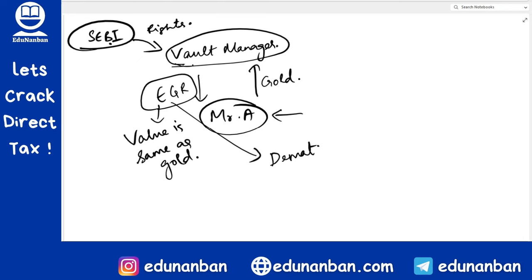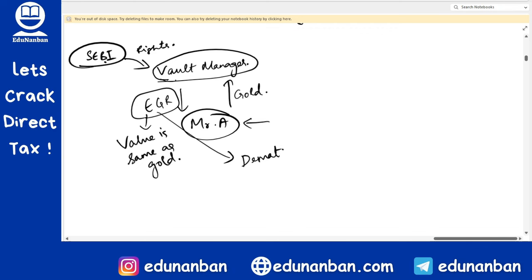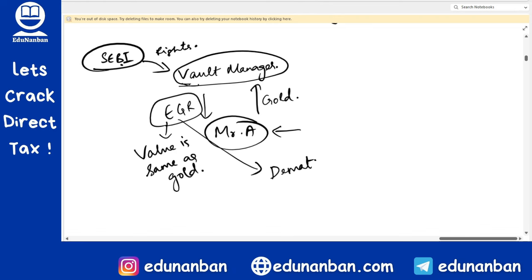If you have a broker account like Zerodha or Motilal Oswal, you can buy and sell Electronic Gold Receipts online at the current prevailing price of gold. If gold is in the house, you always have the stress of safely keeping it. Instead, by paying some minimum conversion charges, you can convert physical gold into EGR at any time.